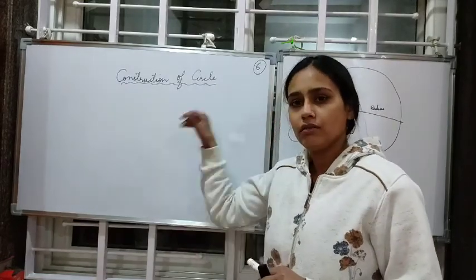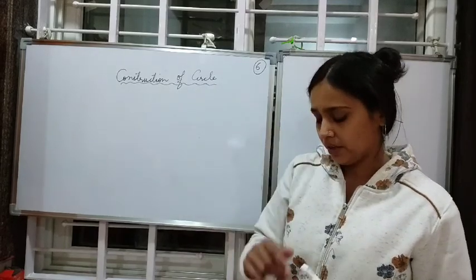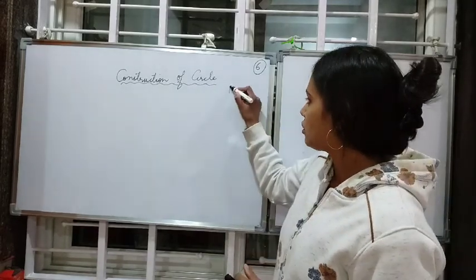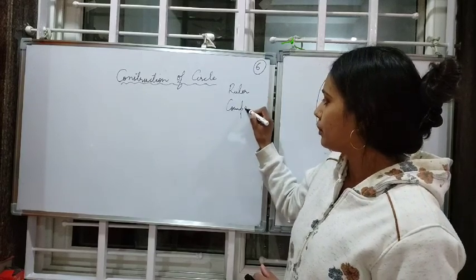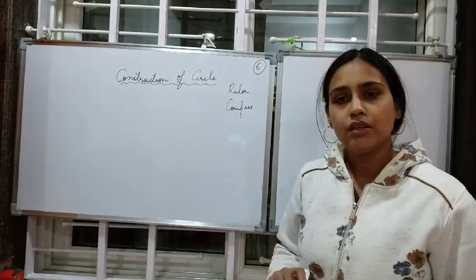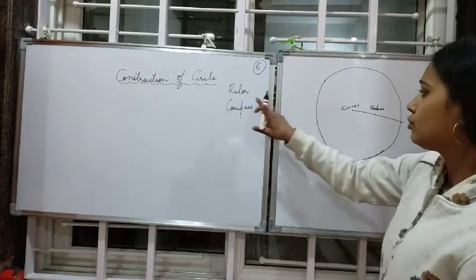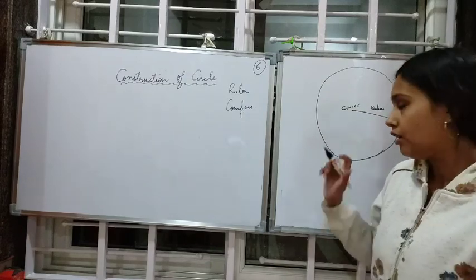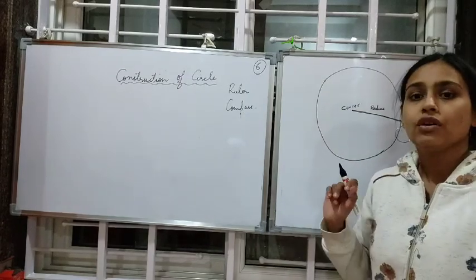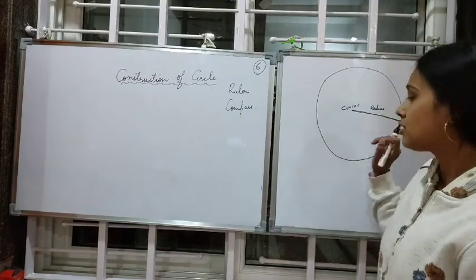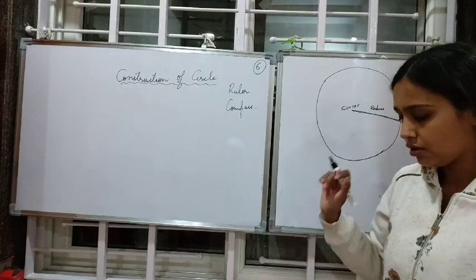For that, you need two things: your ruler and your compass. We also need to know the radius, because if the radius is known, it becomes very easy for us to draw a circle.